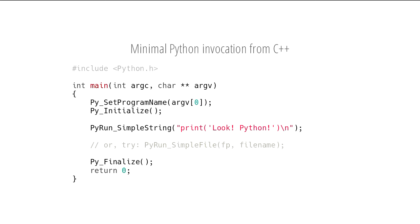So time for some code. If you want to invoke Python from C++, this is the least that you need to do. PySetProgramName allegedly informs the interpreter about paths to Python runtime libraries. Py_Initialize actually initializes the interpreter, and then if you want to run a little piece of Python, you can call PyRun_SimpleString, give it some code, and this will print out 'look, Python'. Or you can have it execute an entire file with PyRun_SimpleFile, giving it a file pointer and a name, and then you shut down the interpreter with Py_Finalize.